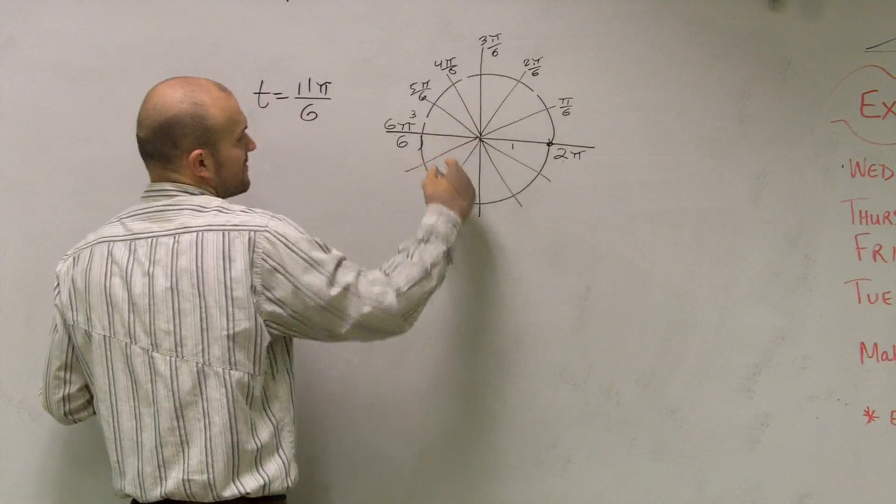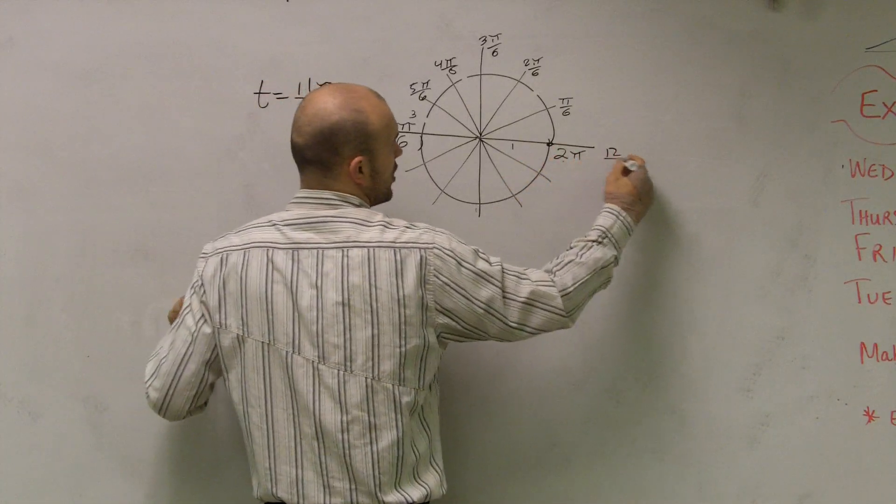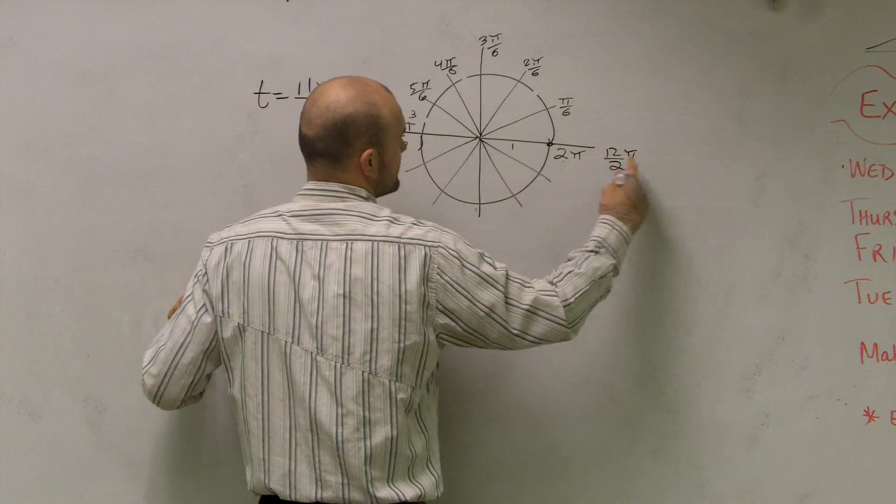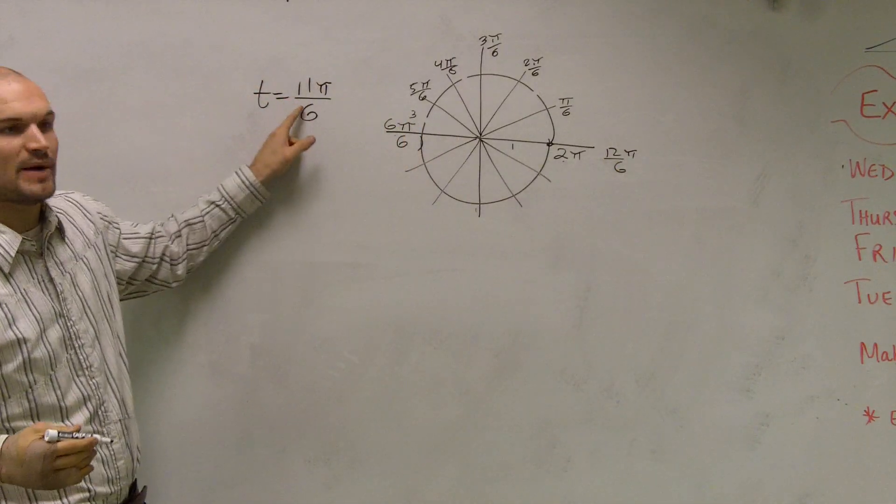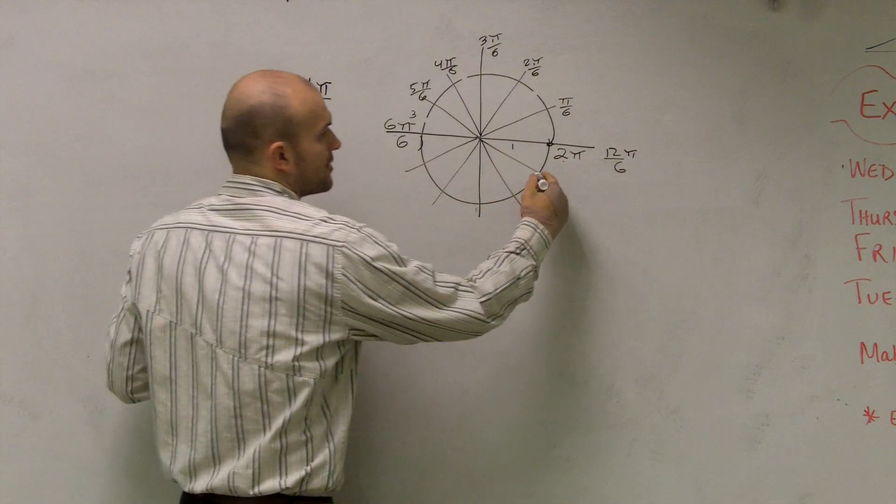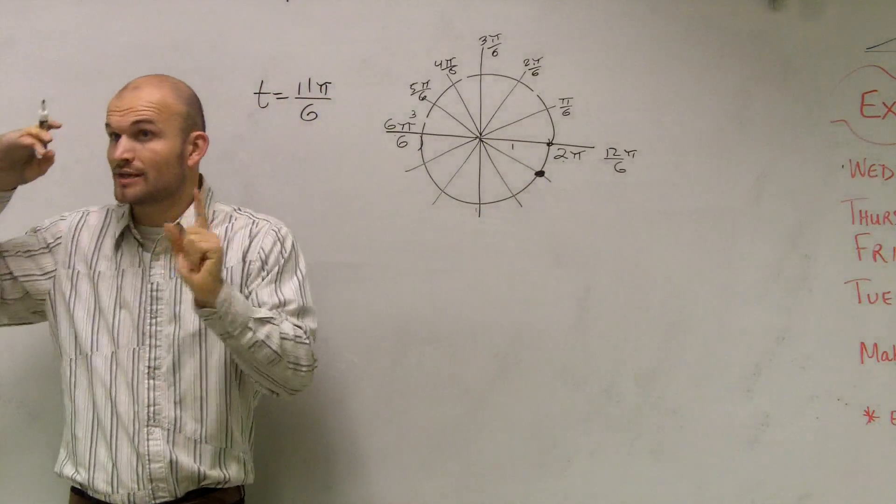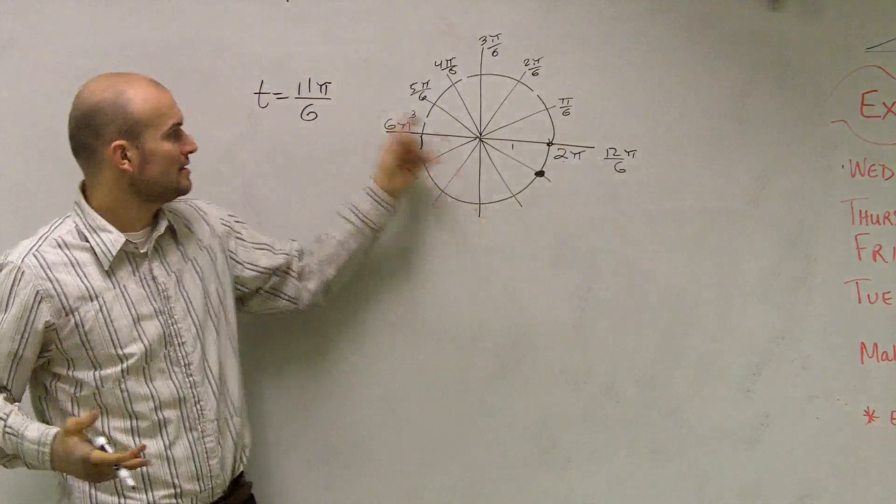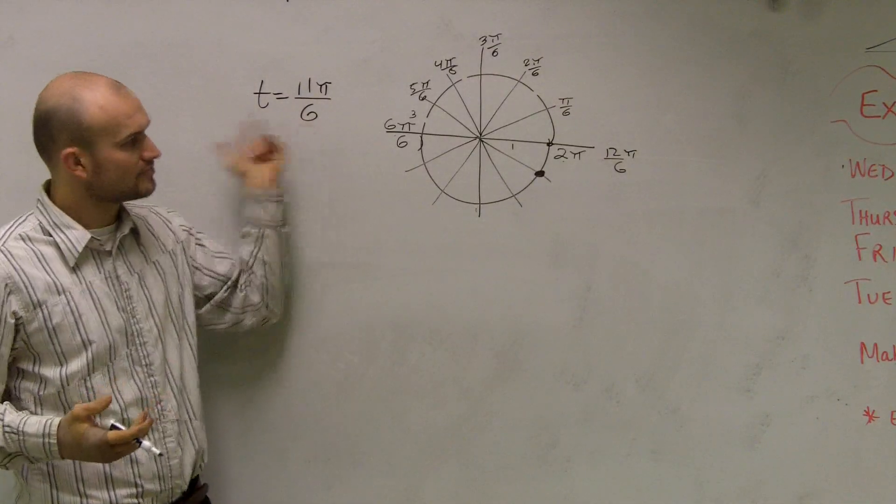And obviously you can go 7, 8, 9, 10, 11, 12. Well, is 12π over 6 the same as 2π? Yes it is. So they're asking where is 11π over 6? That's going to be this point right here. That's step number one. The easiest way to do it is to section off your unit circle into what your denominator is.